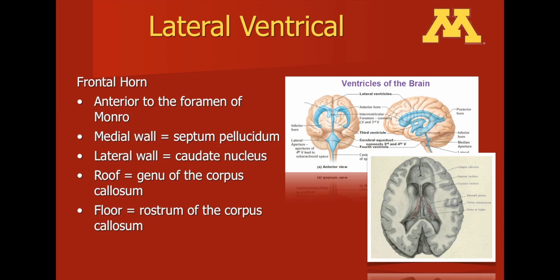I am going to describe now the anatomy of the lateral ventricle. The lateral ventricle is seen in the depiction on the right; the ventricular system is in blue, and the lateral ventricle is the C-shaped structure seen in both hemispheres. The lateral ventricle is lateral to the third ventricle and is connected to the third ventricle through the foramen of Monroe, which again can be seen in this depiction on the right.